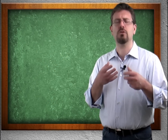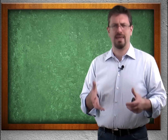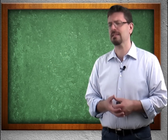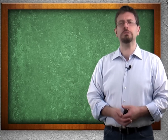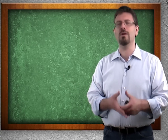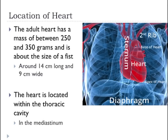Where is the heart located? It is about 250 to 300 grams in an adult human being, and about the size of an adult fist — whatever size your fist is, that's about the size of your heart. It's about 14 centimeters long and about 9 centimeters wide.